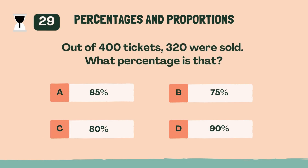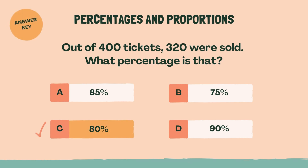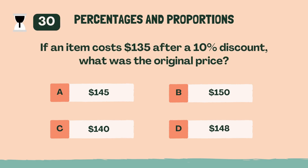Out of 400 tickets, 320 were sold. What percentage is that? C, 80%.